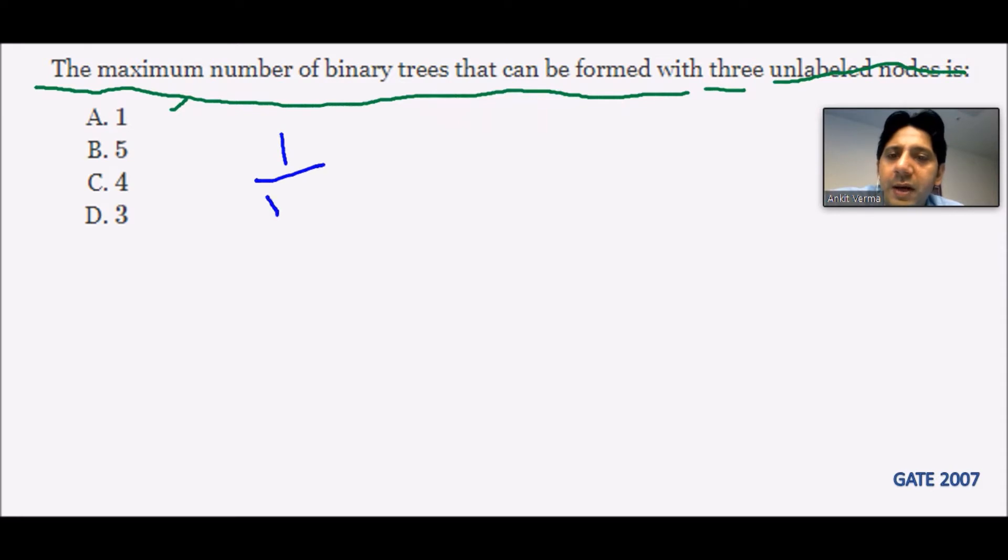So that is equal to... the number of nodes n, the value is given as 3. So 1/(3+1) * 2*3C3, which is equal to 1/4 * 6C3.